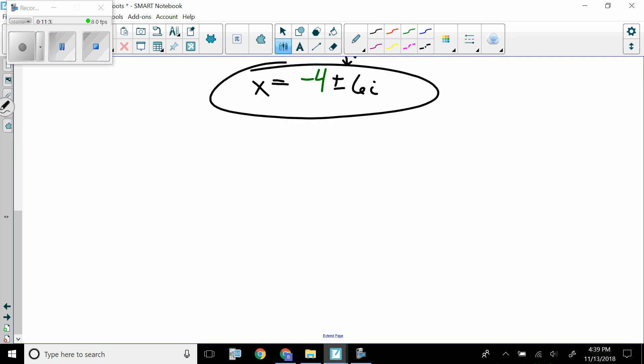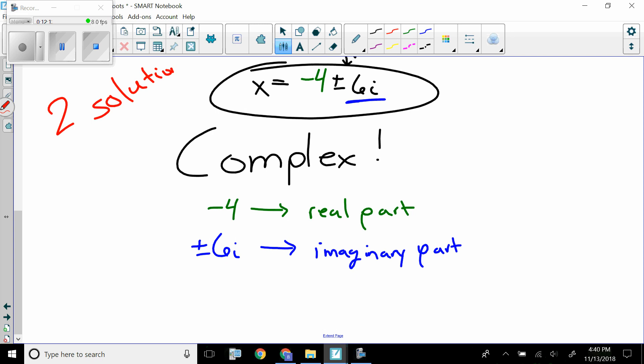Are these solutions that I have written here complex, real, or imaginary? Well, these ones are complex. The negative 4 is the real part, and then 6i is the imaginary part. Technically, I should be writing this plus or minus 6i, because I have exactly two solutions. One of them is negative 4 plus 6i, and the other one is negative 4 minus 6i.